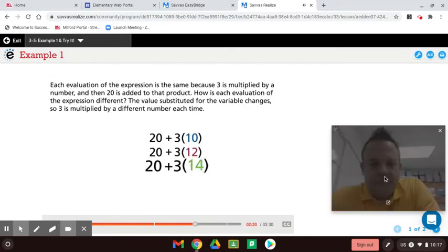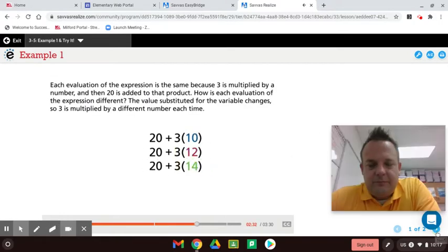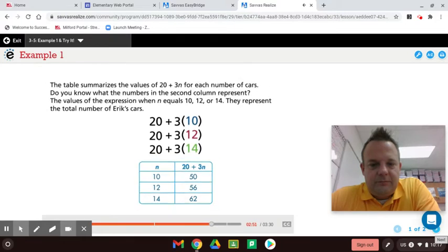Each evaluation of the expression is the same, because 3 is multiplied by a number, and then 20 is added to that product. How is each evaluation of the expression different? The value substituted for the variable changes, so 3 is multiplied by a different number each time. The table summarizes the values of 20 plus 3n for each number of cars.